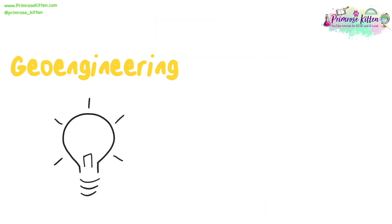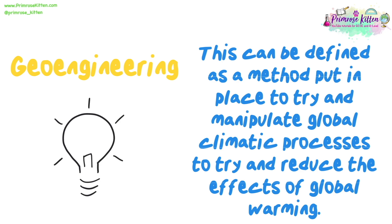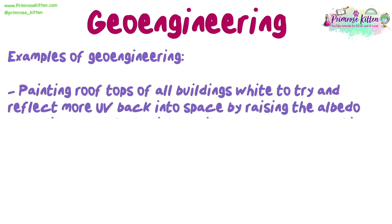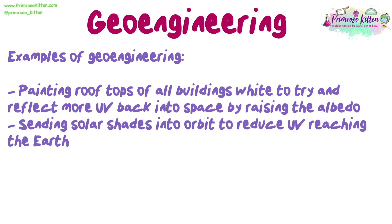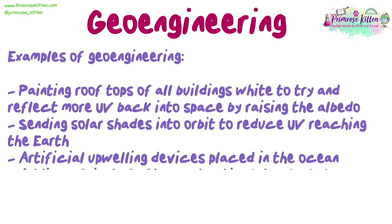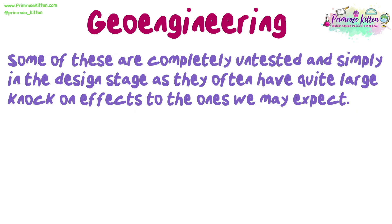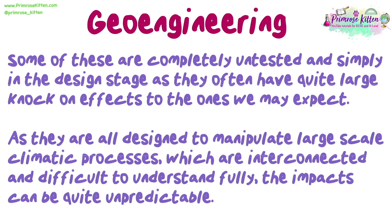We are now going to look at techniques known as geoengineering, defined as a method put in place to manipulate global climatic processes to reduce the effects of global warming. Examples include: painting rooftops white to reflect more UV back into space by raising the albedo; sending solar shades into orbit to reduce UV reaching Earth; artificial upwelling devices in the ocean; and adding nutrients to the sea to stimulate algal blooms, which would die and take sequestered carbon to the seabed. Some are completely untested and still in the design stage, as they often have large knock-on effects. Because they manipulate large-scale interconnected climatic processes, impacts can be quite unpredictable.